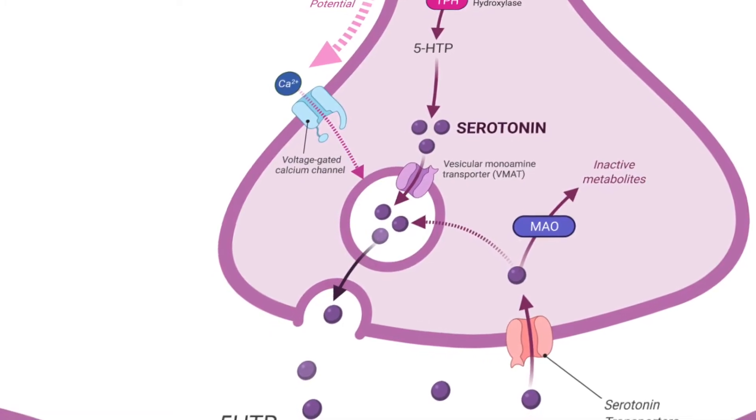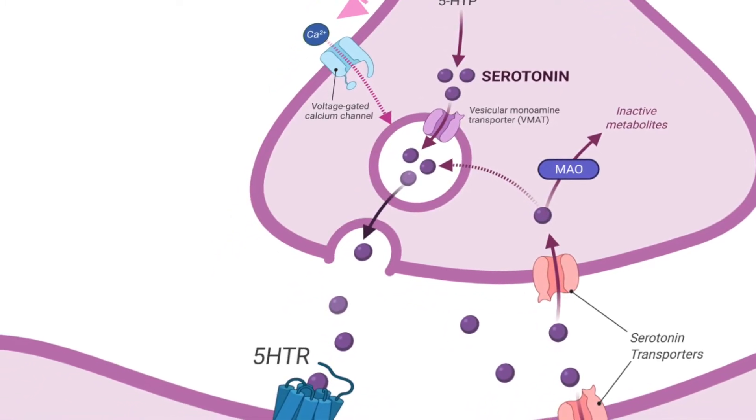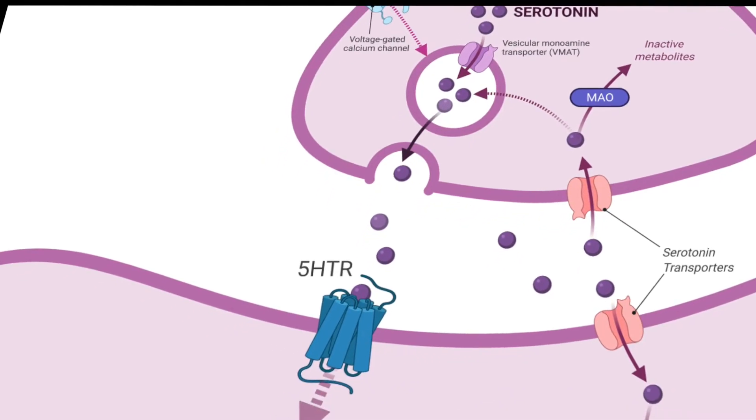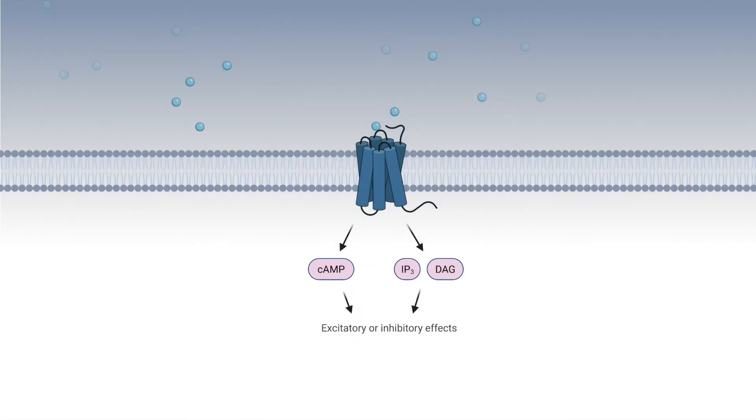So now that we have serotonin generated and stored in a vesicle, the action potential arrives, stimulates the release. Now we're talking about receptor activation. The effects of binding one of these receptors can be excitatory or inhibitory, depending on the type of receptor. The second messenger system is either cyclic AMP or the IP3 DAG pathway.